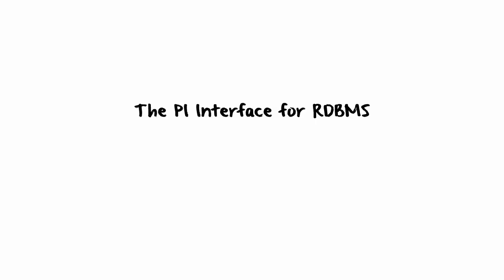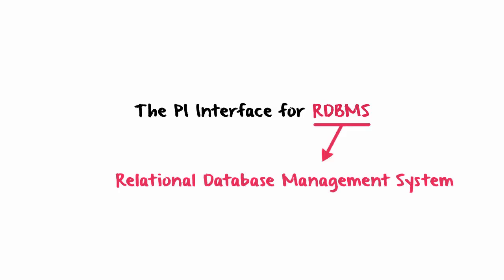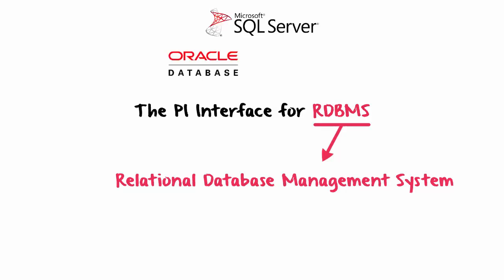So what's the PI Interface for RDBMS? It's a PI Interface that collects data from relational database management systems. Common examples include Microsoft SQL Server, Oracle Database, and IBM DB2. The full name is actually the PI Interface for relational database RDBMS via ODBC, meaning that it can collect data from any RDBMS that has an ODBC driver.